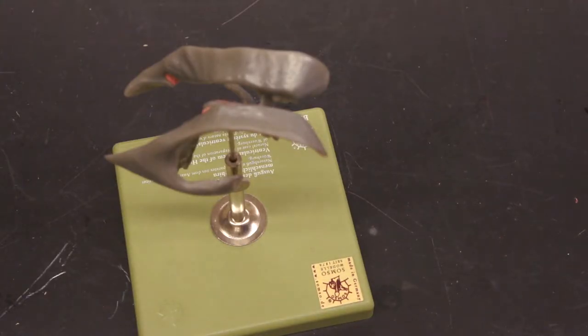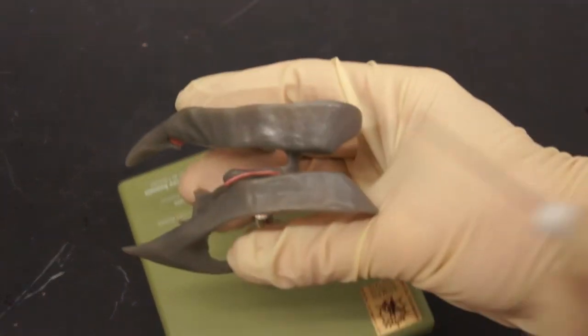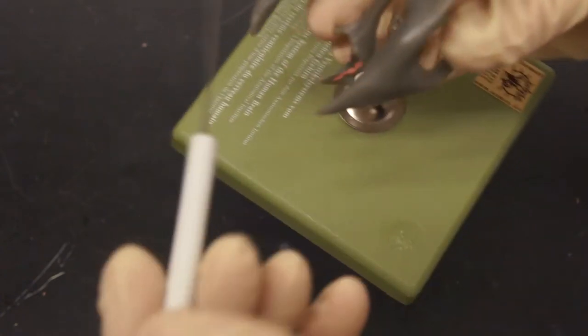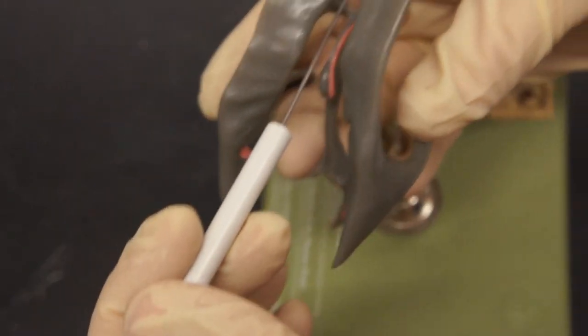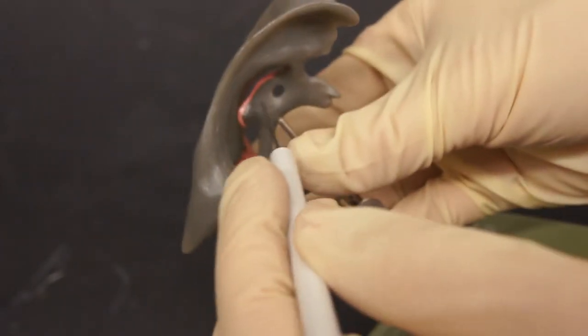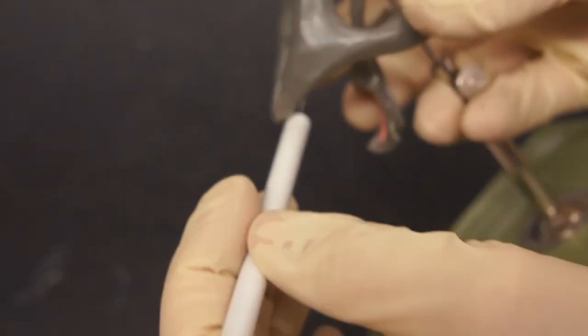This is a model of the ventricles of the brain. This model shows spaces in the brain, so it is not necessarily a structure. Here we have two lateral ventricles, these large ones. We have interventricular foramina, remember that this is a model of spaces, so this is showing passageways. Then we have the third ventricle, which is this one, right here. We can orient ourselves, because this is where the interthalamic adhesion goes.